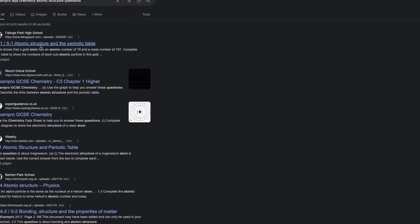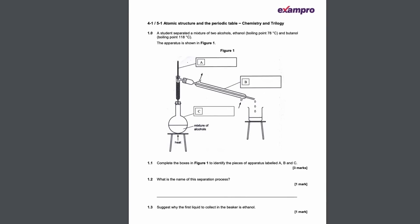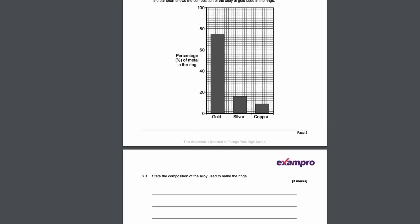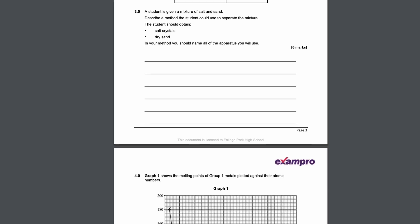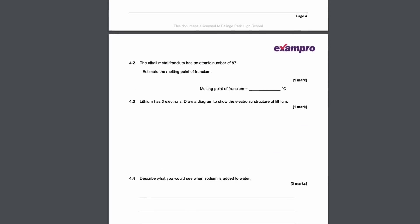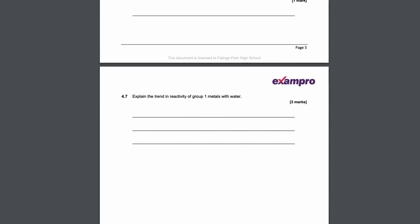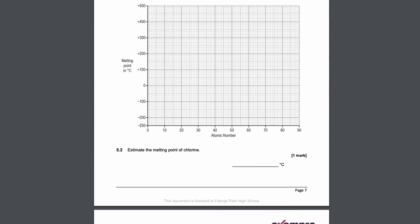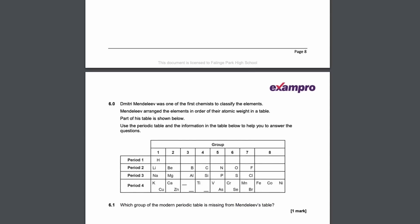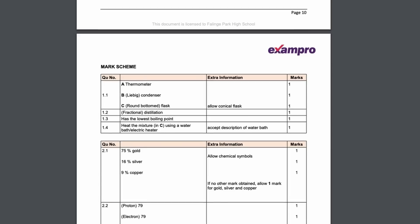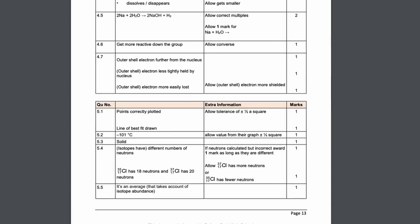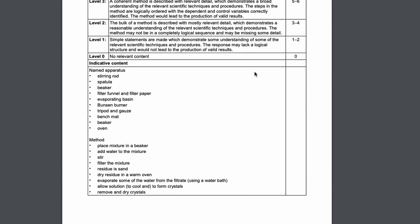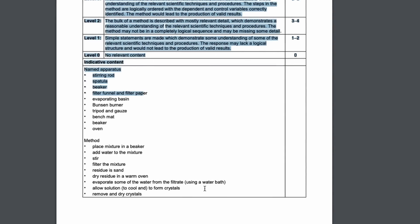I recommend opening up PMT, going through their topic list, and just doing questions. You'll quickly realize how similar the exam questions are when you do them topic by topic. If you finish the PMT questions, go to ExamPro — you can find all these different worksheets to do for free online. For chemistry especially, stick to topic-based exam practice, but don't neglect past papers, especially if you struggle with timing.